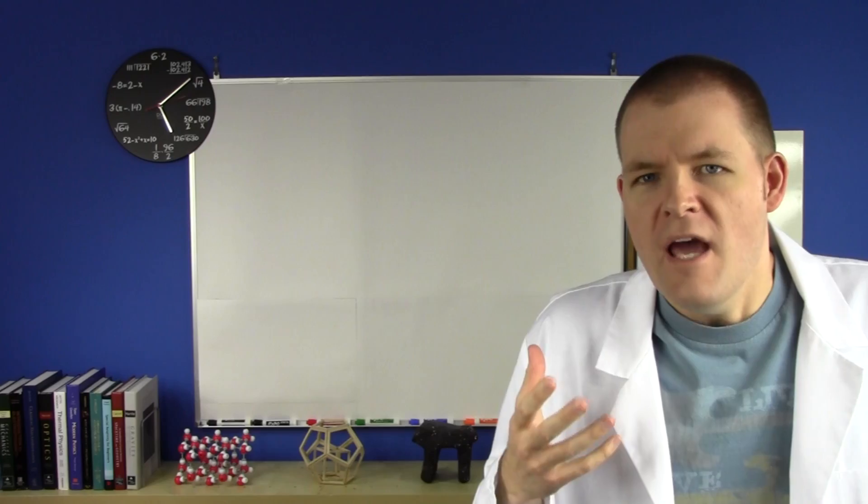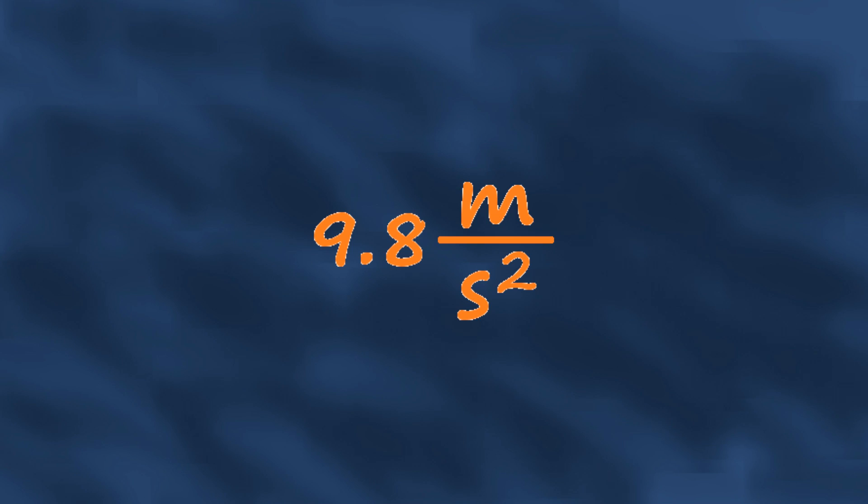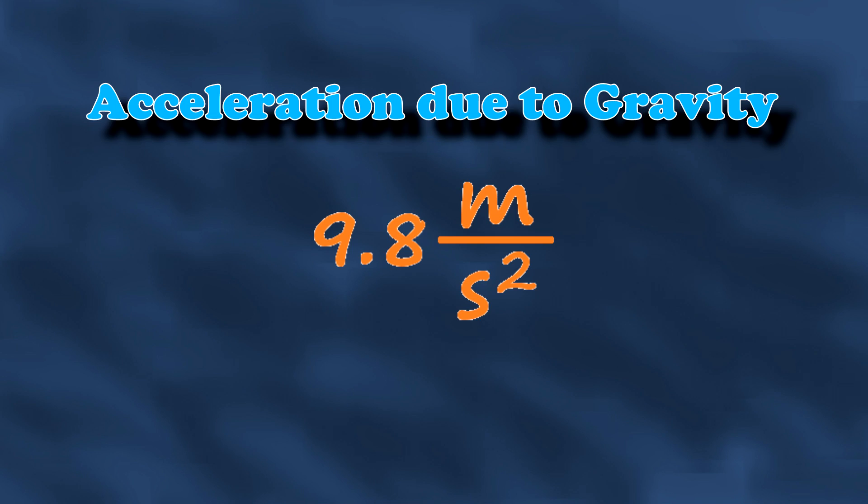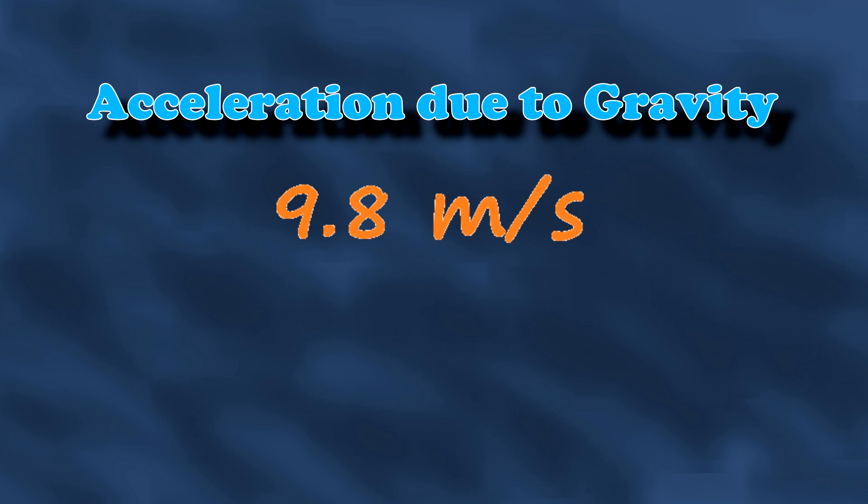Anyway, down here gravity pretty much affects everything the same everywhere. A typical physics teacher would quote a number like 9.8 meters per second squared. That's an acceleration, or how fast your speed changes as you fall. In this case, that's 9.8 meters per second per second.